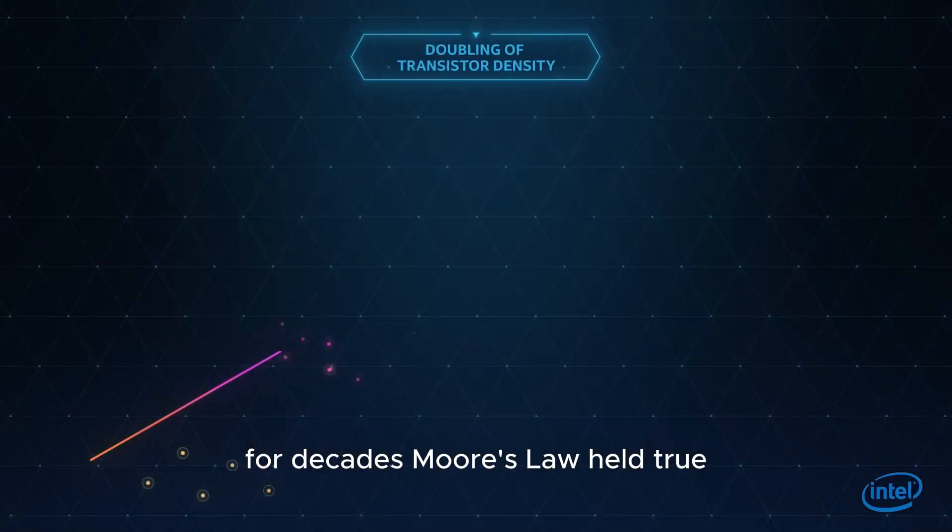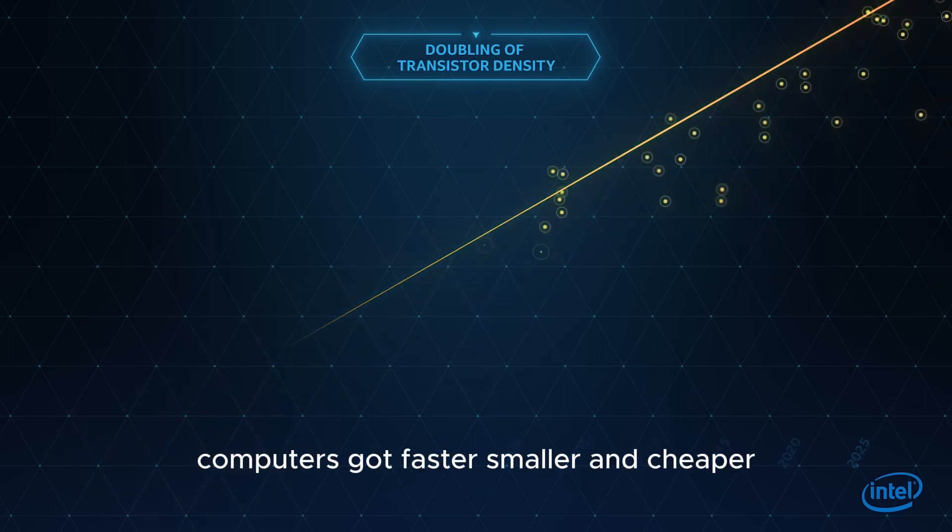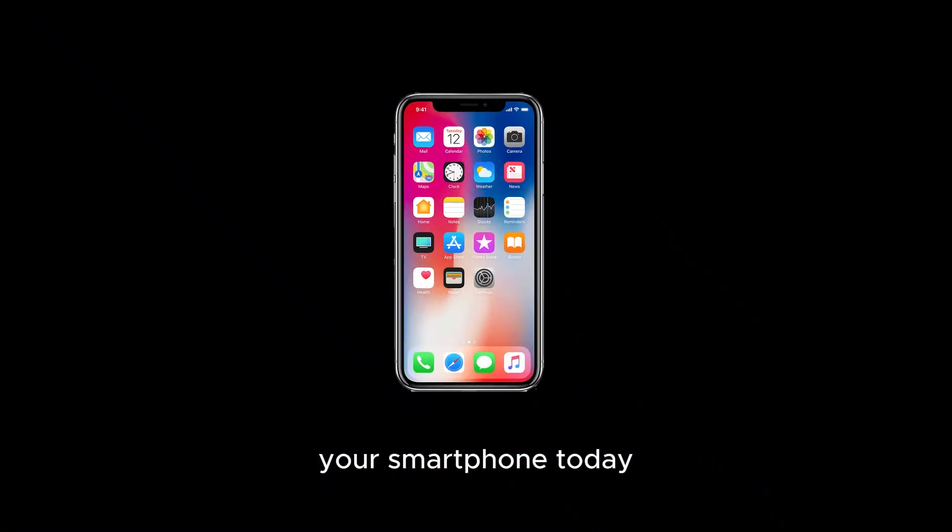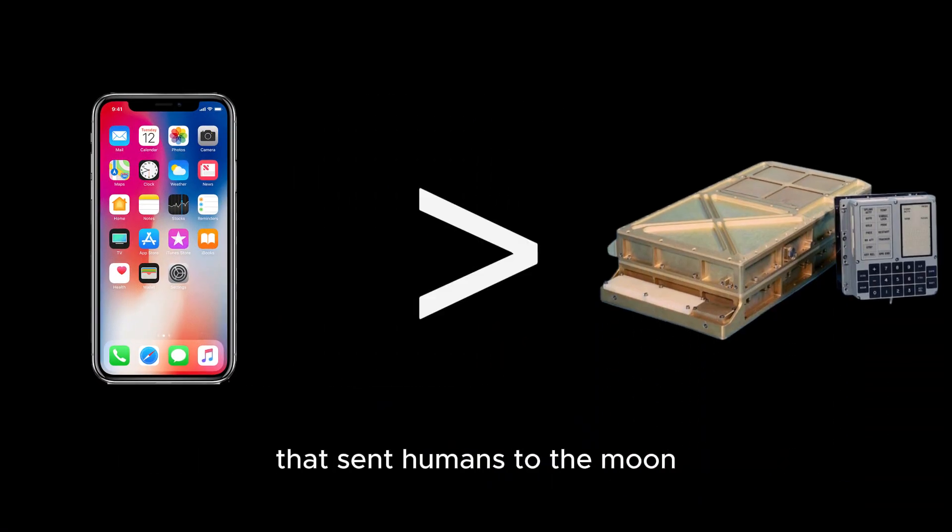For decades, Moore's Law held true. Computers got faster, smaller, and cheaper. Your smartphone today is millions of times more powerful than the computers that sent humans to the moon.